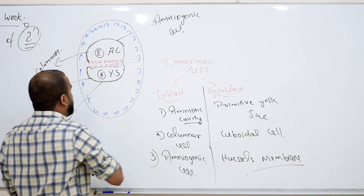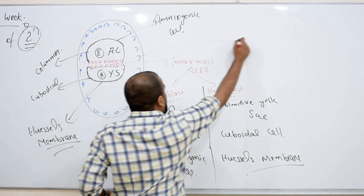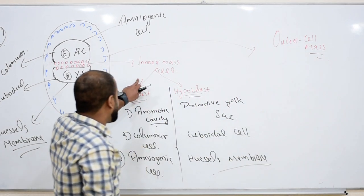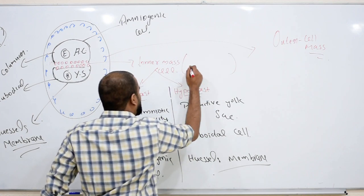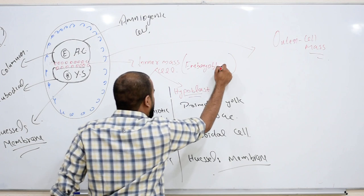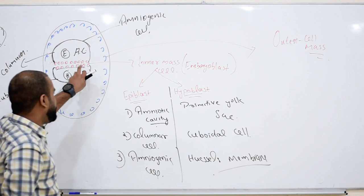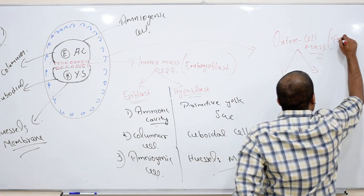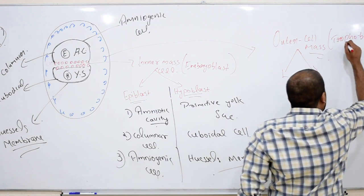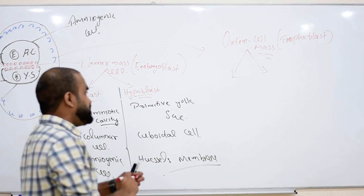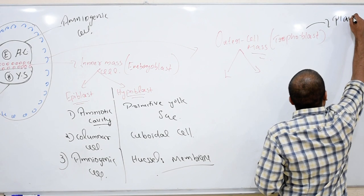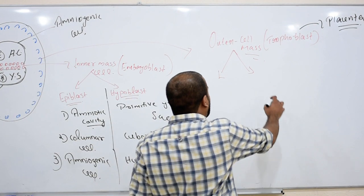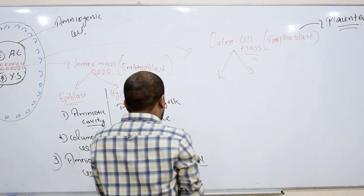Now let's move to the outer cell mass. The inner cell mass is called embryoblast, and the outer cell mass is called trophoblast. 'Trophic' means nutrition, so trophoblast is the nutritive layer. Later, this becomes the placenta — the connection between the mother and baby. This trophoblast is again divided into two layers.